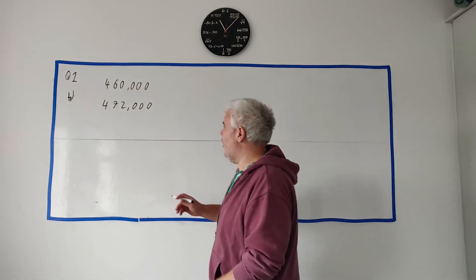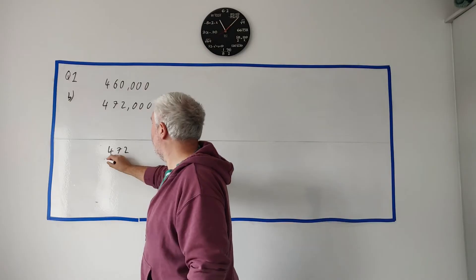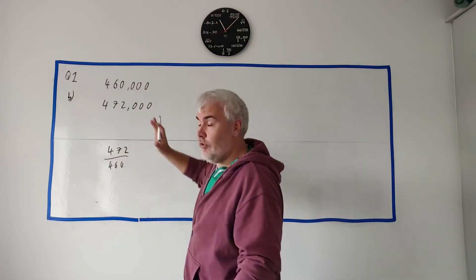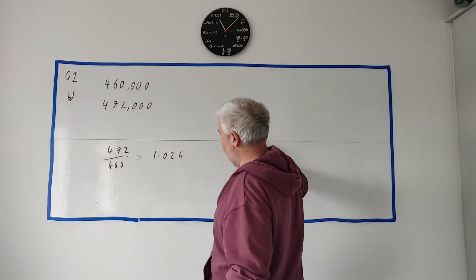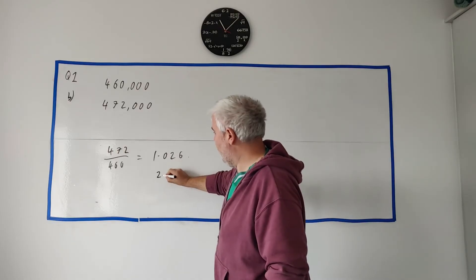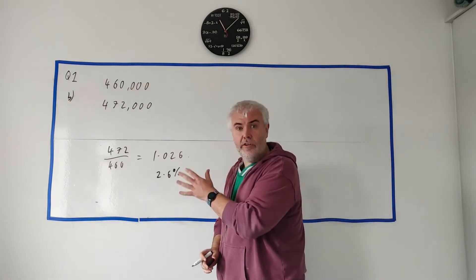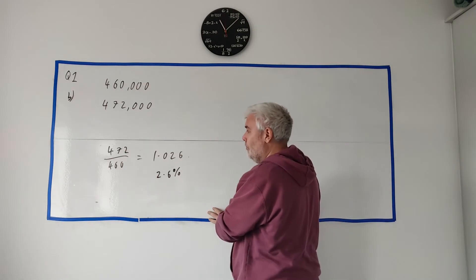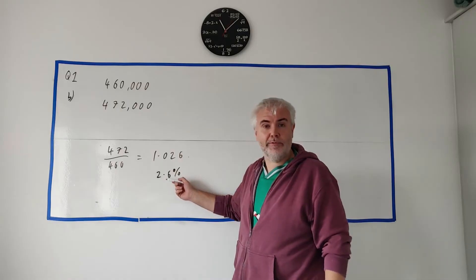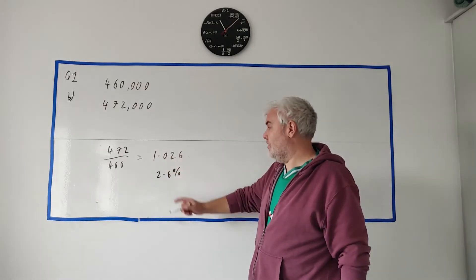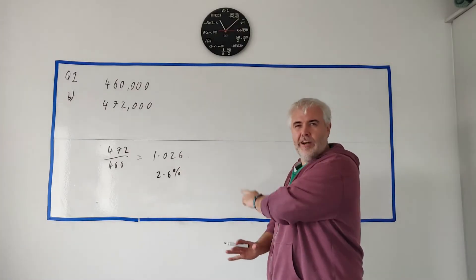Before we get into part C, let me just quickly show you how I really would have done this question. Really I would have just got this number divided by this one. So I would have just got 472 divided by 460. All the zeros will cancel. And this would come out as 1.026 and round it off. So I would instantly just go, well, the answer is 2.6%. My main job I deal in finance and stuff. I deal in percentages all the time. I just have learned over the years that's how I would do it.